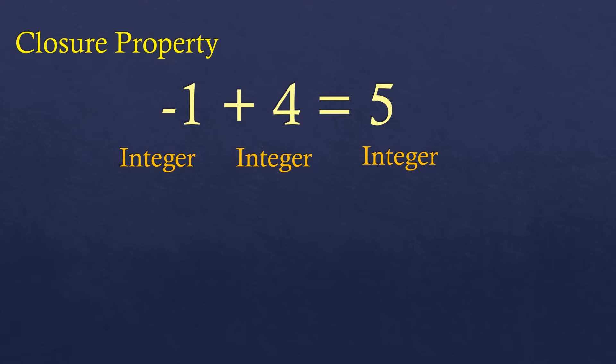The set of integers is closed under the operation of addition. When you add two integers, the result is an integer. The same is true for multiplication — when you multiply two integers, the resulting product is also an integer. The same applies to subtraction — when you subtract two integers, the result is also an integer. So the set of integers is closed under addition, subtraction, and multiplication.